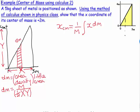Now I multiply by the little area of each slice. Each slice has a small width dx and a height h. Since the slices are very thin, there's essentially no difference between the left and right edges of the slice, so I can treat the height as simply h.